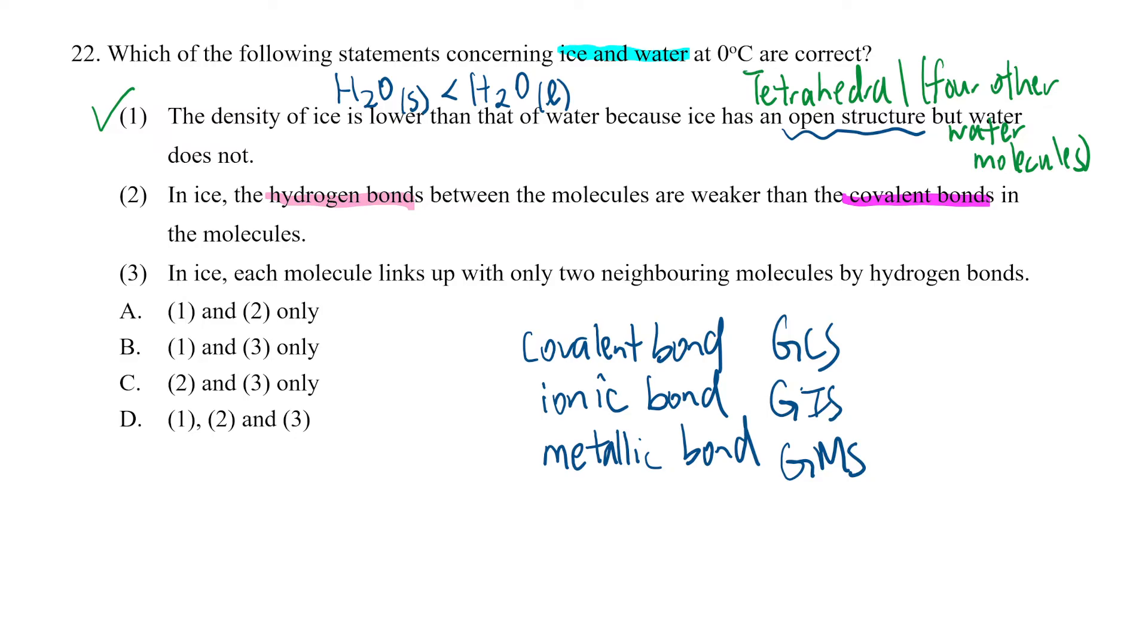So these you can say they're all number one, hydrogen bonds would be number two, and van der Waals forces would be number three. So this is obviously true - hydrogen bonds are weaker than covalent bonds. And option three: In ice, each water molecule links up with only two neighboring molecules by hydrogen bonds.